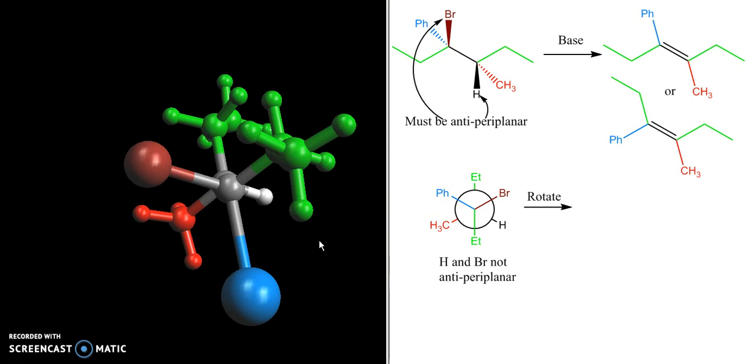What do we get in that Newman projection when I rotate the bromine from over here to over there. So I'm rotating the bromine from here to over there and my bromine is here. My phenyl group is here. My ethyl group is here.